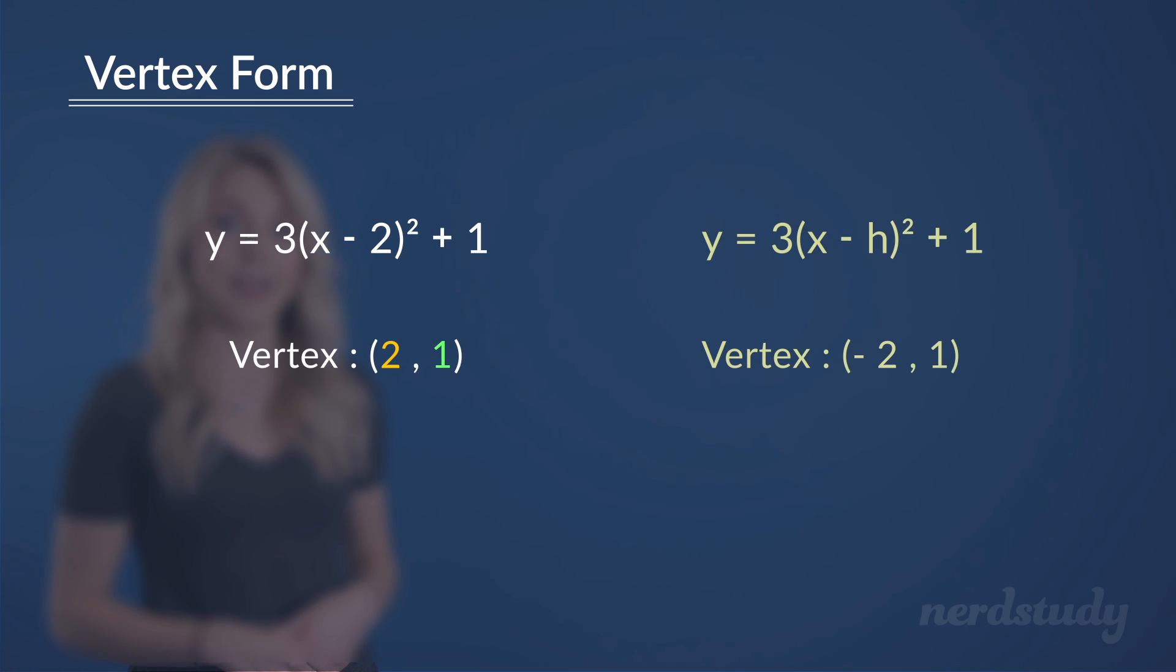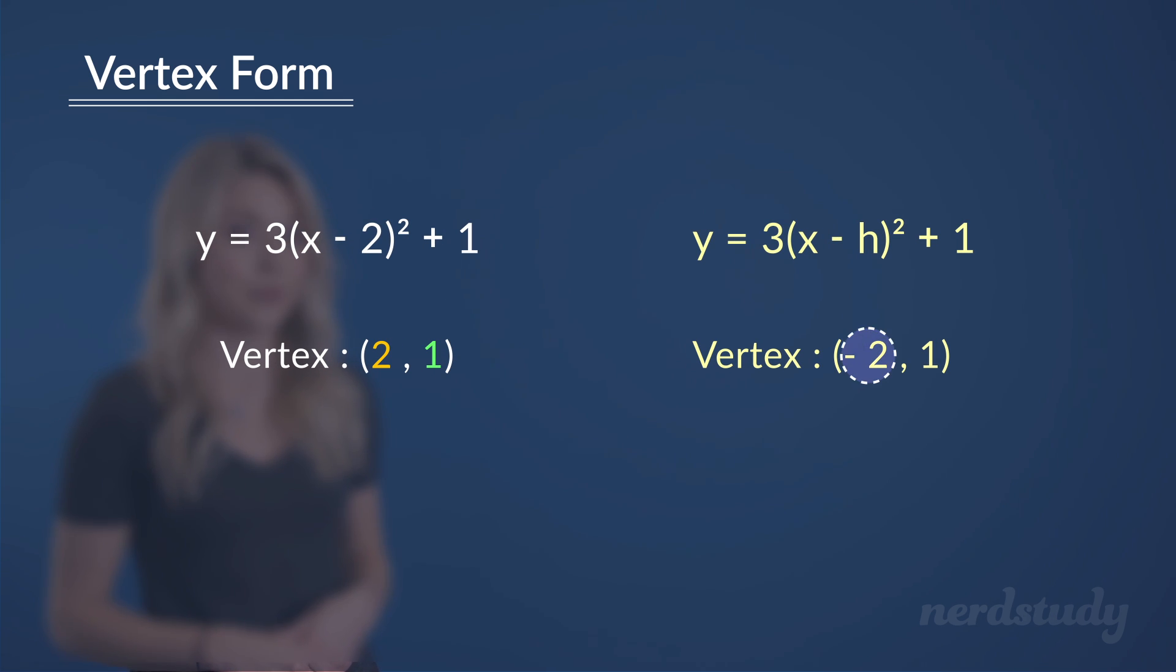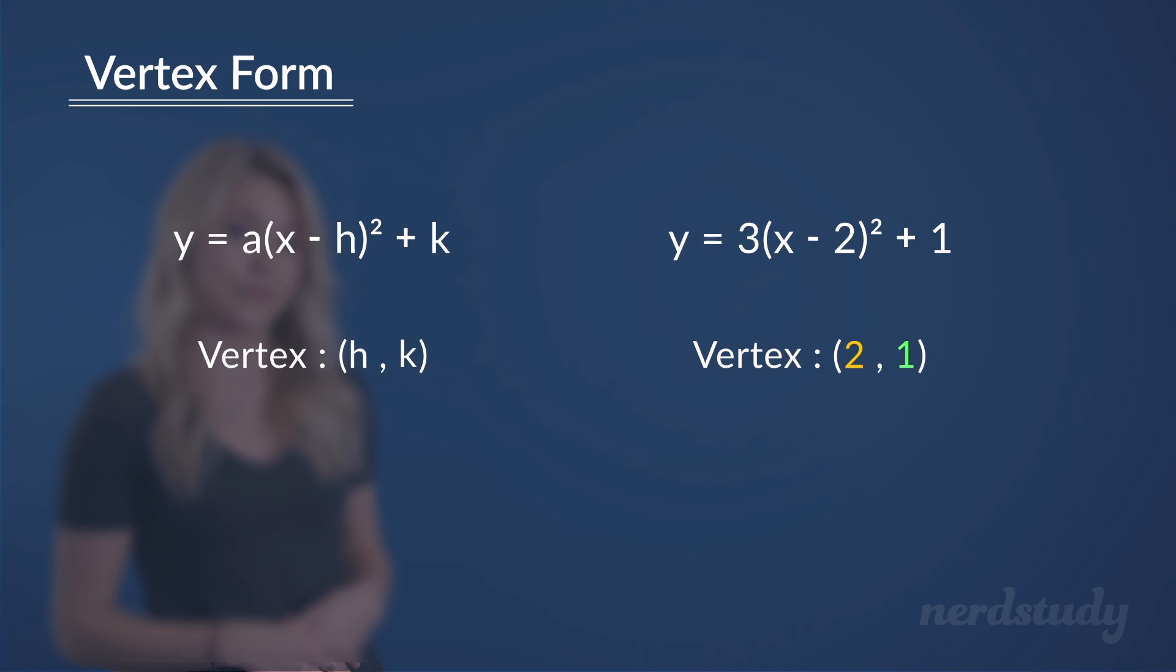If you thought that the h was equal to negative 2, you should try substituting negative 2 into h, and you'd find yourself getting x minus minus 2, which equals x plus 2. And of course, that would be entirely different from what we're looking for. So let's try another question.